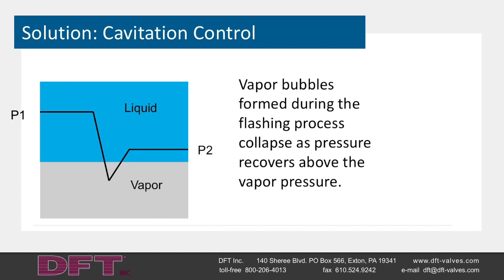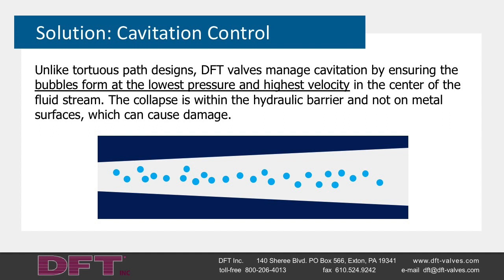Solution: cavitation control. At P1, the fluid stream is all-liquid. Liquid flashes at the valve port when the pressure at the vena contracta drops below the liquid vapor pressure. As the velocity decreases in the exit nozzle, the pressure increases or recovers to P2 and the vapor bubbles collapse — this is the point at which the potentially damaging cavitation occurs. Unlike tortuous path valves, straight-through Venturi control valves manage cavitation: bubbles form at the lowest pressure and highest velocity in the center of the fluid stream, and the subsequent collapse is within the hydraulic barrier, not on the metal surface. The diverging nozzle provides smooth recovery prior to the fluid exiting the valve.